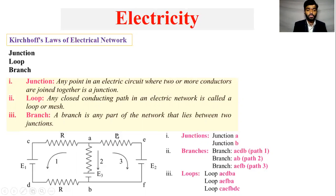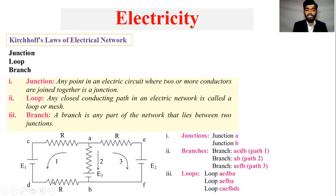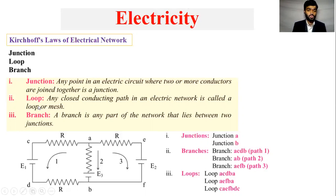And in this circuit, we will get a junction — Junction A and Junction B. Then we will get a loop. So how do we call a loop? Any closed conducting path in an electrical network is called a loop.